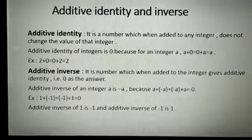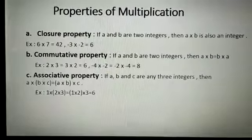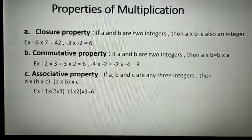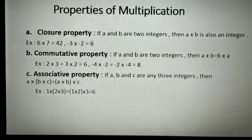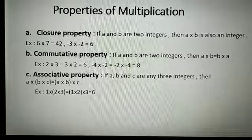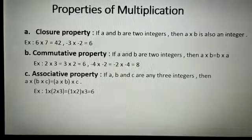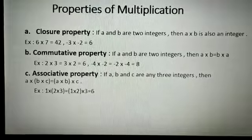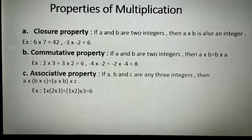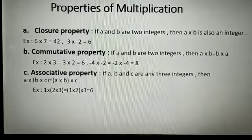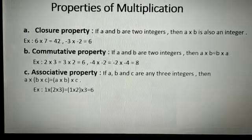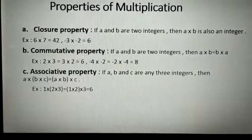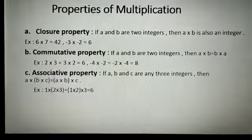Now in this video, we will see the properties of multiplication. Same as addition and subtraction, we will see the closure property, the commutative property, and the associative property. In closure property, if A and B are two integers, then A multiplied by B is also an integer.